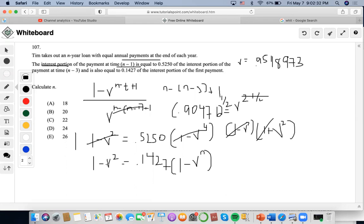So I'll do 1 minus 0.9518973 squared, then divide it by 0.1427 and then minus 1 divided by negative 1. And I'll end up getting 0.342 equals v to the n.